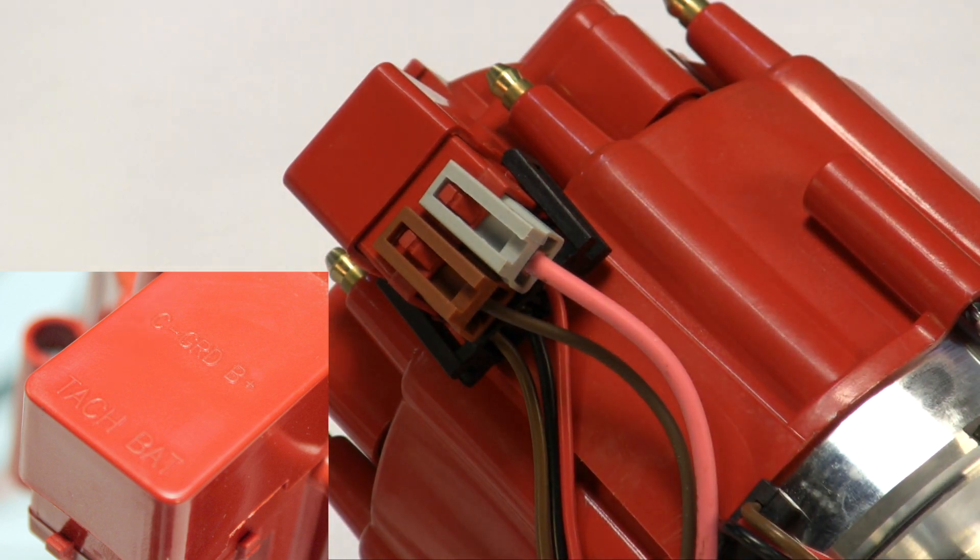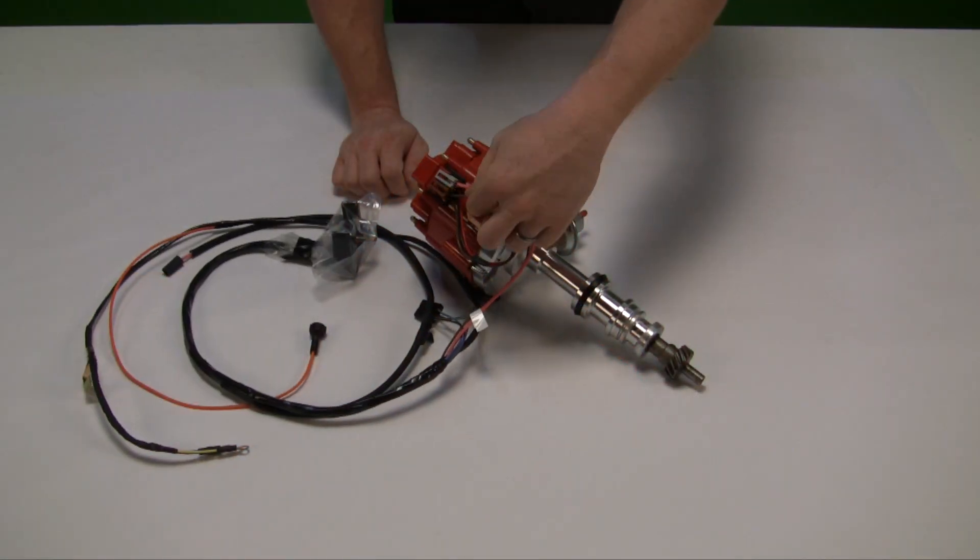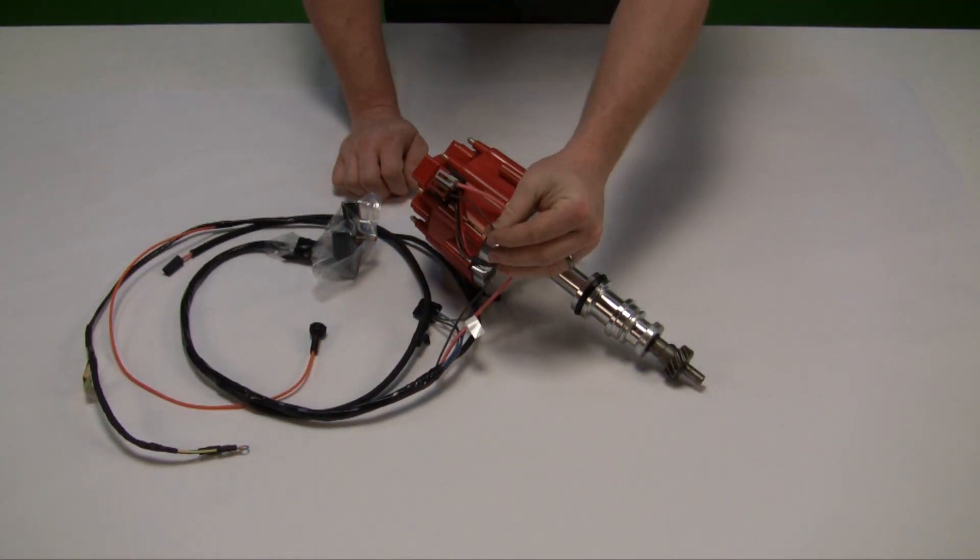The pink wire provides 12 volts in crank and run to get the car running, and this is your signal back inside the car for your tachometer.